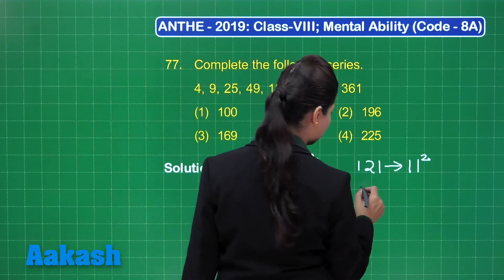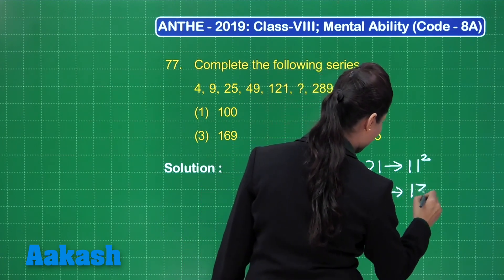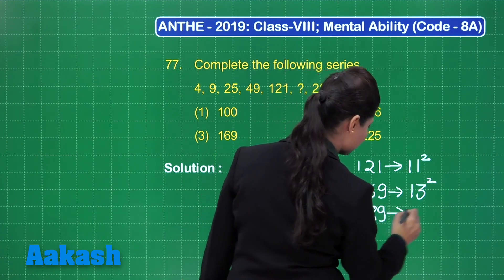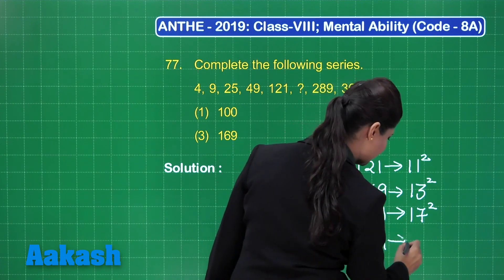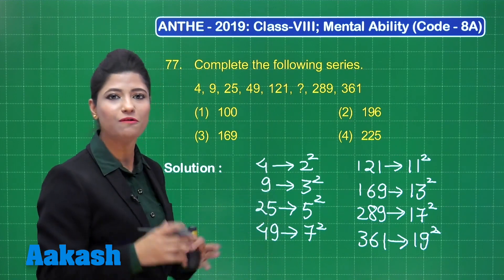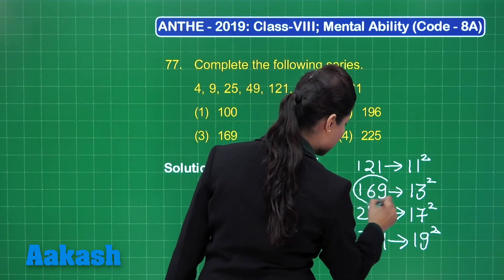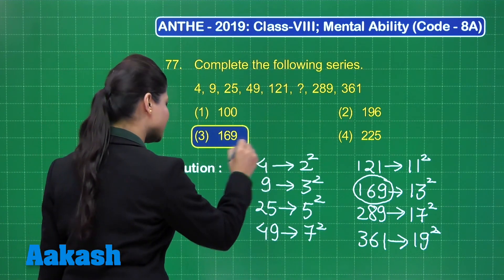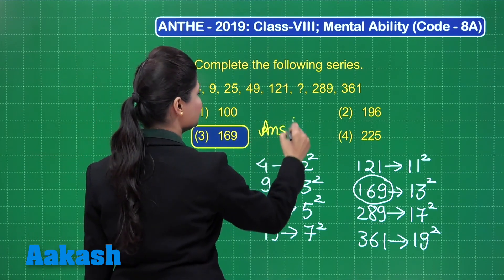The next prime number is 13, so the missing number should definitely be 169, which is the square of 13. After that, the prime number is 17, so 289 is the square of 17, while 361 is the square of 19. This is a series of squares of prime numbers, meaning the missing number is 13 squared, that is 169.